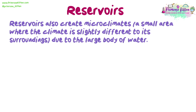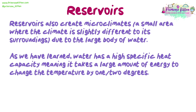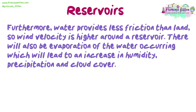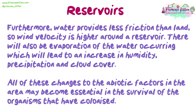Reservoirs also create microclimates — a small area where the climate is slightly different to its surroundings due to the large body of water. As we have learned, water has a high specific heat capacity, meaning it takes a large amount of energy to change the temperature by one or two degrees. This helps to buffer temperature changes in the area directly around the reservoir, meaning temperatures are usually more stable. Furthermore, water provides less friction than land, so wind velocity is higher around the reservoir. There will also be evaporation of the water occurring, which will lead to an increase in humidity, precipitation and cloud cover. All of these changes to the abiotic factors in the area may become essential in the survival of the organisms that have colonised.